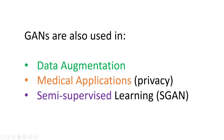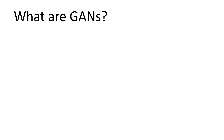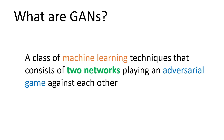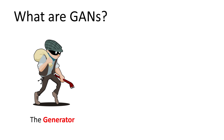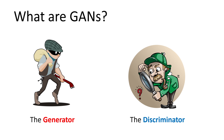What I've shown you is really just a small list of examples. There are many more and new applications being discovered every day because it's such an exciting and new field. Now let's look at the idea behind GANs. GANs are a class of machine learning techniques that consist of two networks playing an adversarial game against each other. One of these networks is called the generator, which we can view as a sort of counterfeiter. The other network is the discriminator, which we can view as a sort of detective.